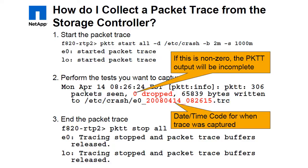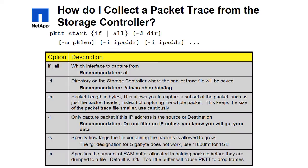Here is a listing of some of the options that can be used with the pktt command. If you want to specify a specific interface you can use the -if option instead of 'all'. We don't recommend this because normally we want to capture on all interfaces.